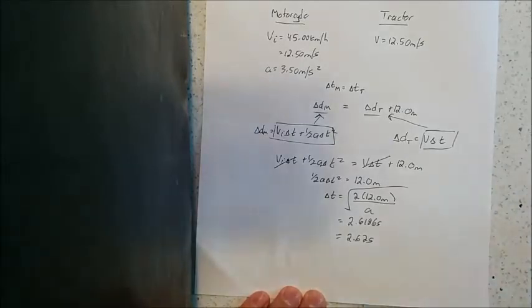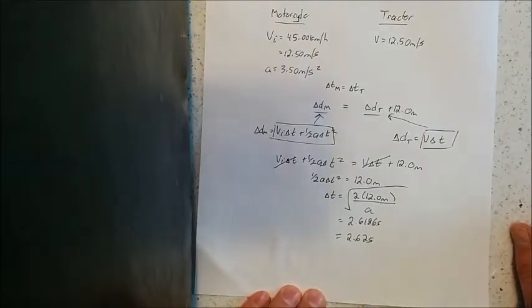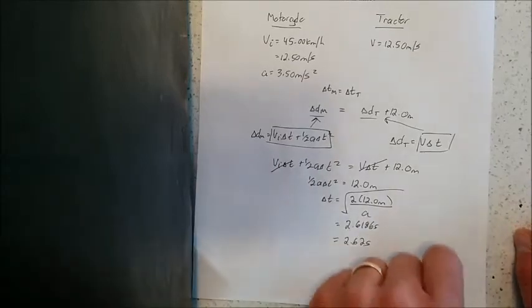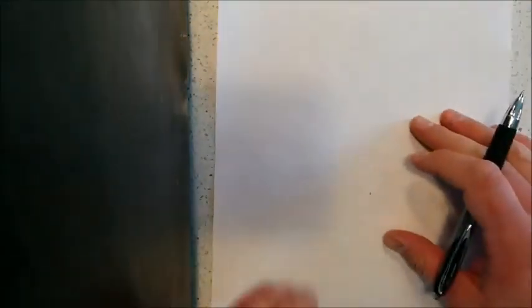Now for the second part of the problem, I want to find out the distance that the two of them had traveled and I could find them independently. A way of checking your work is to ensure that the answers I get for part B are actually 12 meters separate. So I'll check it right now.